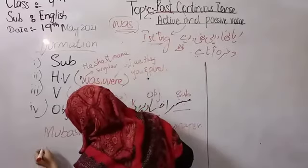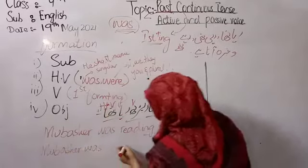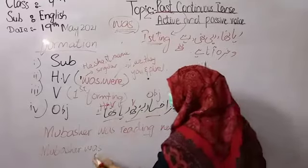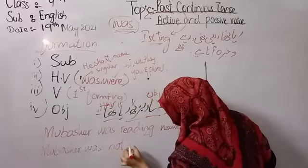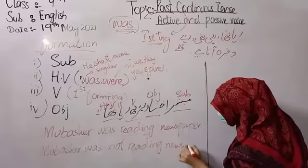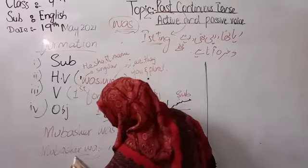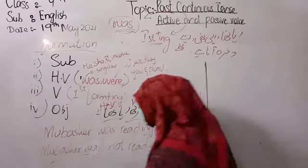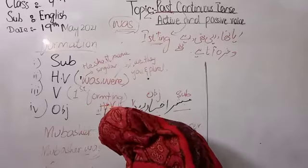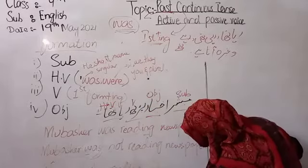For the negative form: Mubashir akhbar nahi parh raha tha — Mubashir was not reading newspaper. For the interrogative form, you bring the helping verb to the front: Was Mubashir reading newspaper?